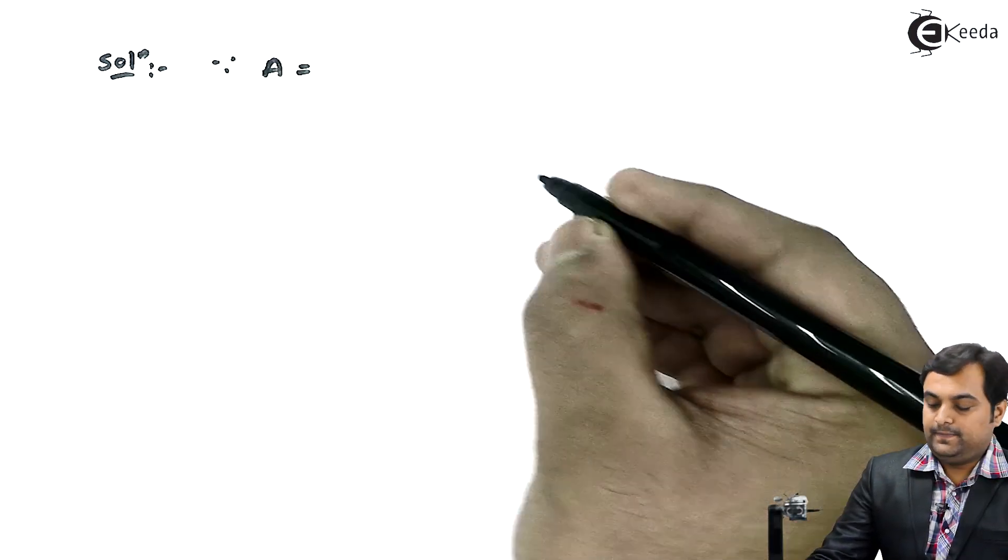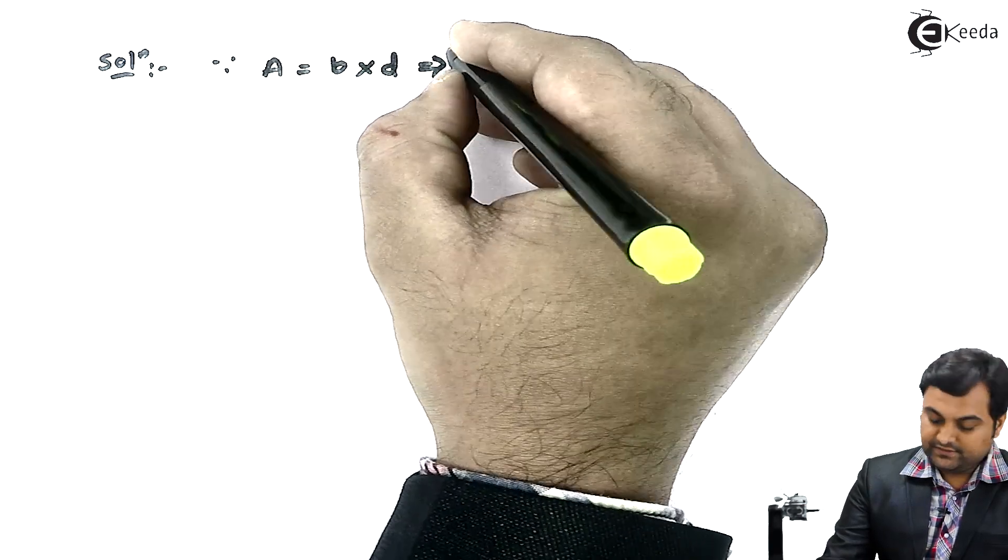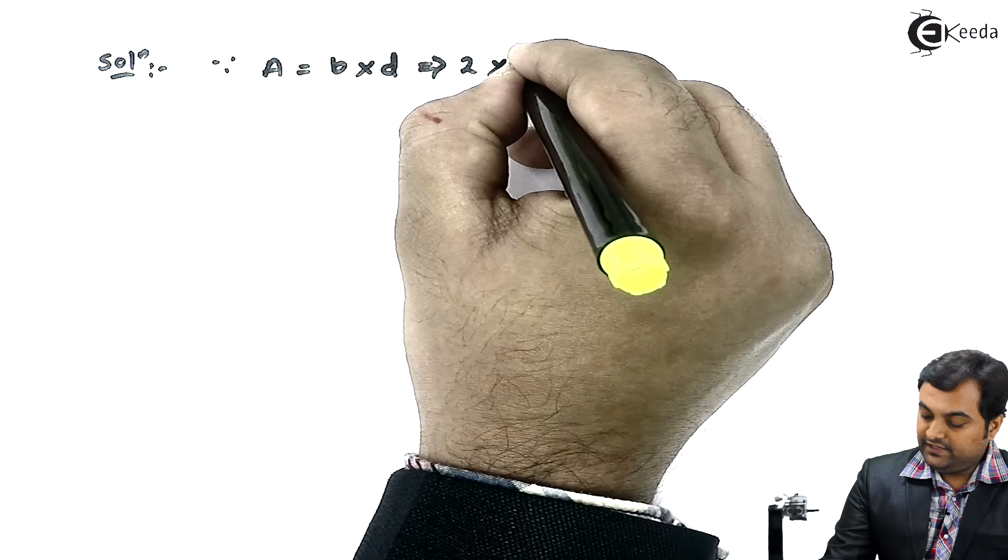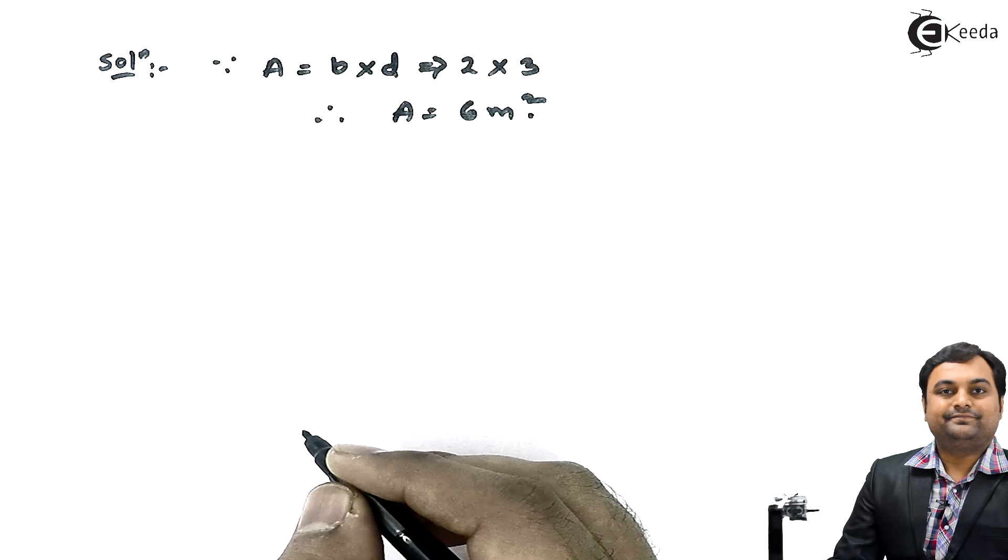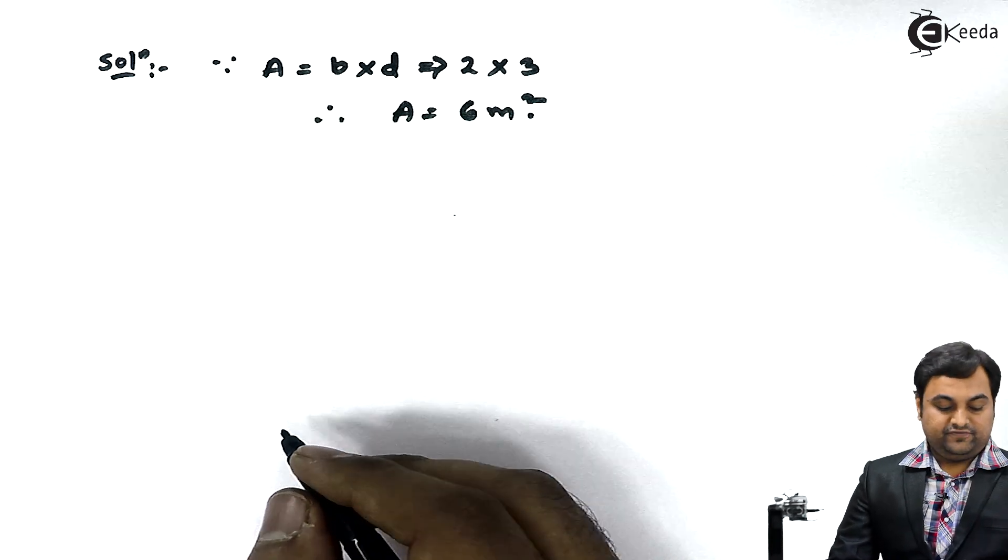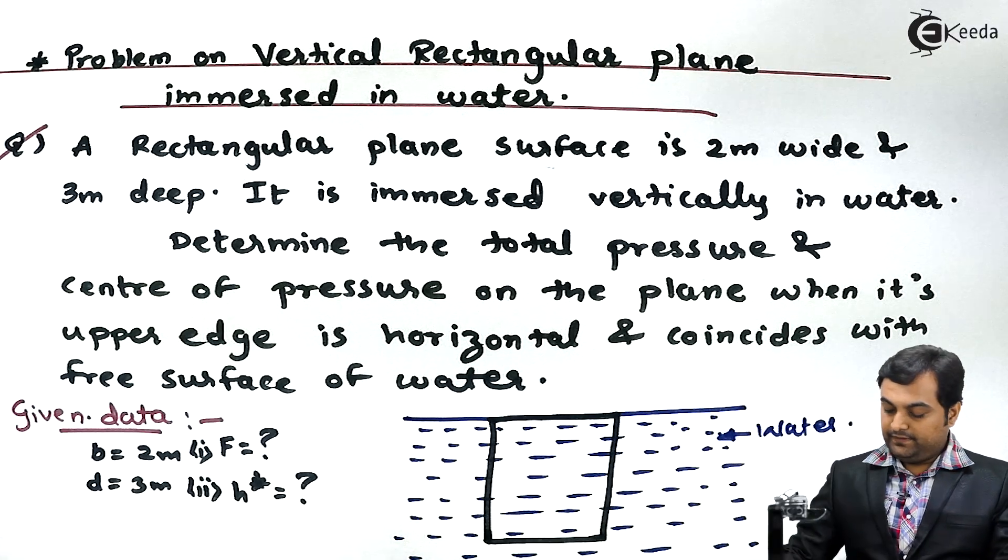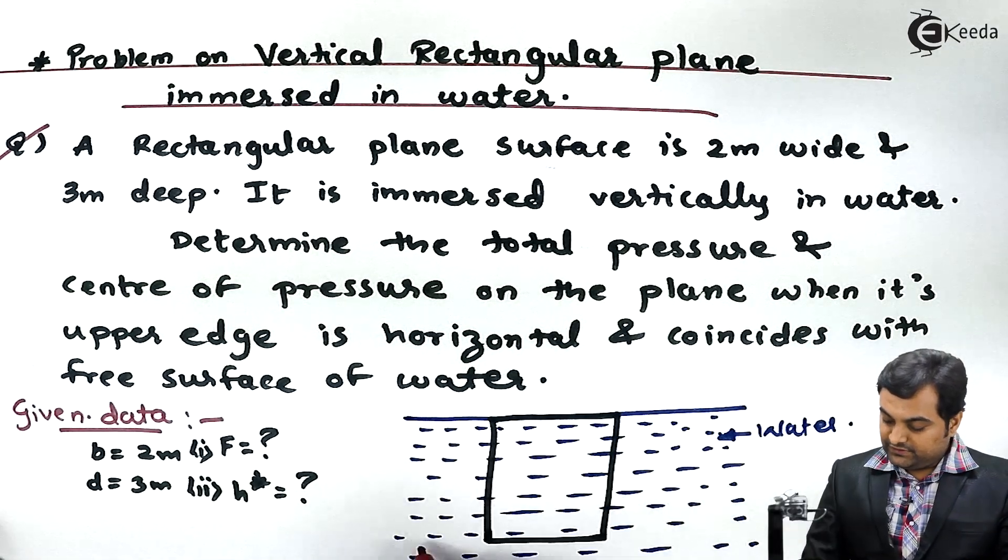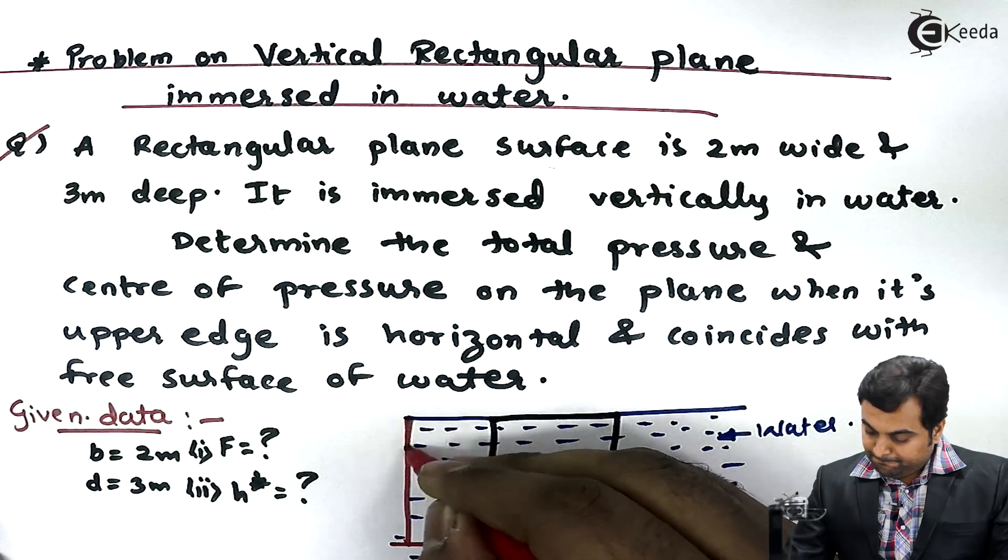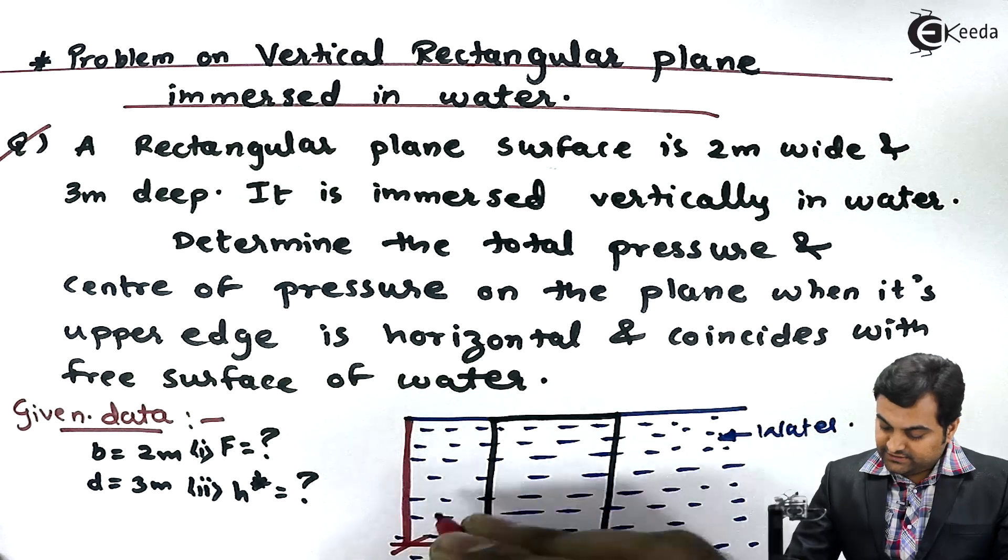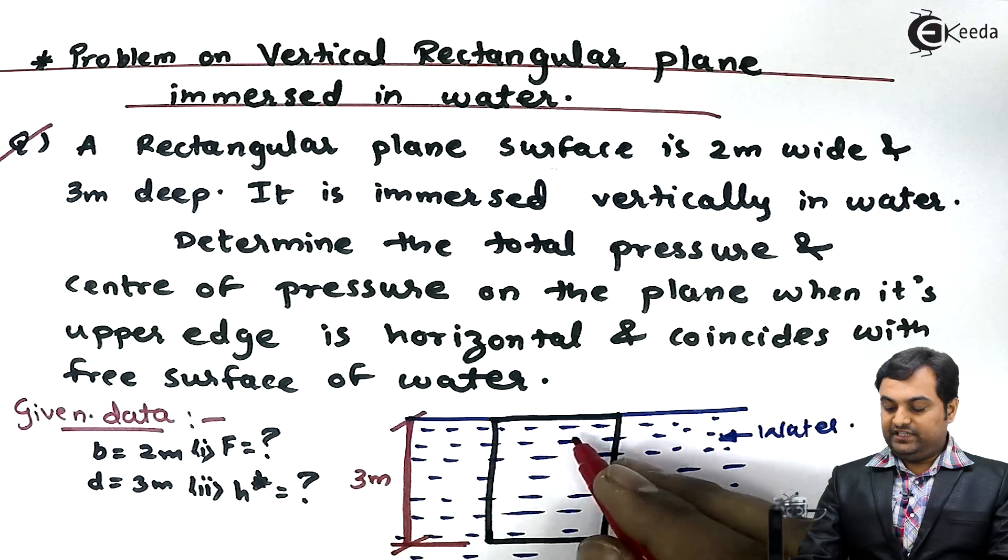Solution: Since area of the rectangle is given as B into D, B is 2 and D is 3, so area comes out to be 6 meter square. Now after getting area, here we have to even locate the centroid. Since the height of the rectangle plate, this height is 3 meter, so centroid or center of gravity will be at exactly half of this.